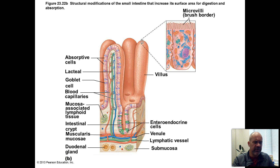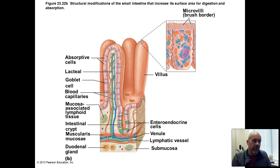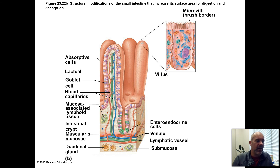As we're going to see when we talk about the liver, it does lots and lots of different things with our nutrients. It's responsible for processing and dealing with most of these absorbed nutrients, which is why the blood that has taken up these nutrients goes to the liver first.